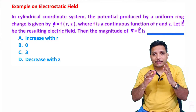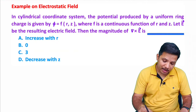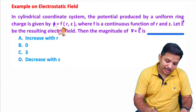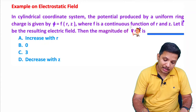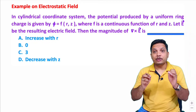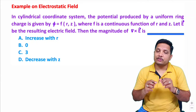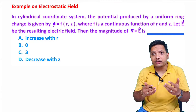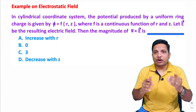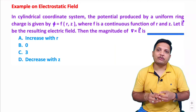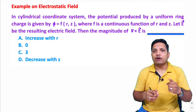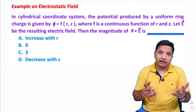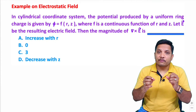We need to understand what is given to us. We have been given with a uniform ring charge, and because of that, we have been given with potential phi, which is a function of r and z, where f is a continuous function. So we have a uniformly charged ring — the charge is fixed. It generates a potential that is a continuous function, meaning we have an electric field which is not changing with respect to time. So the situation is electrostatic. Whatever electric field is generated because of this charge, that will be an electrostatic field — not electrodynamic — as the charge is fixed on the ring.